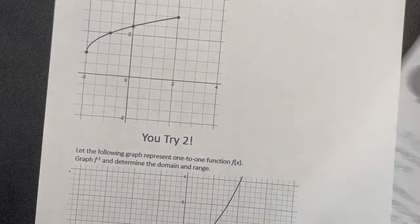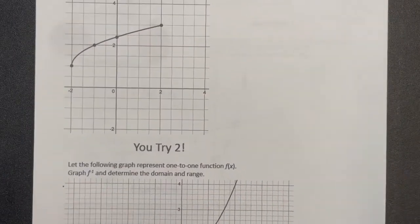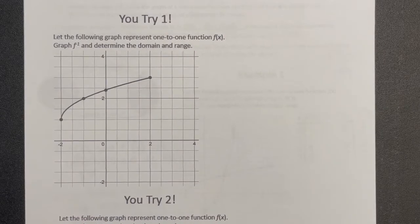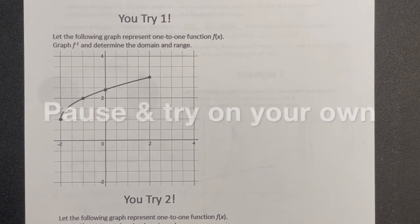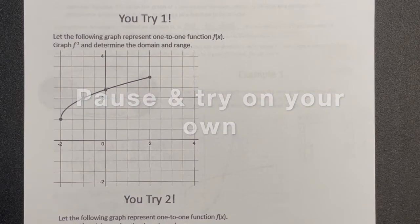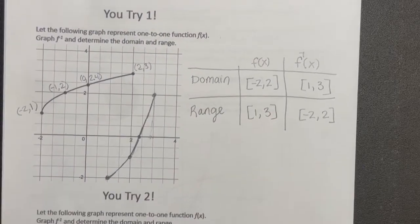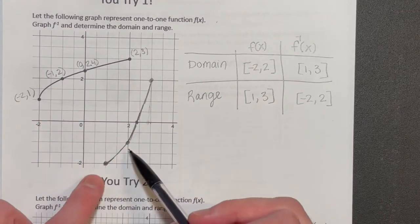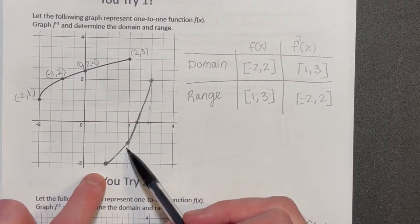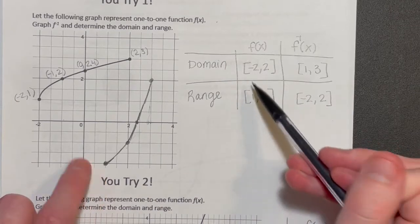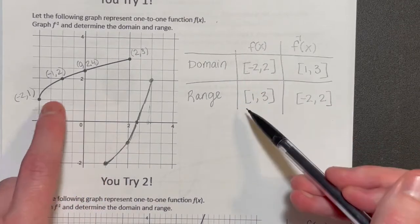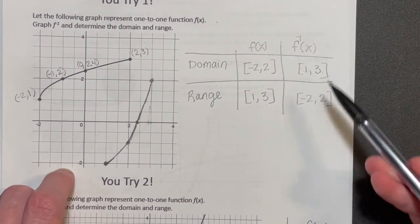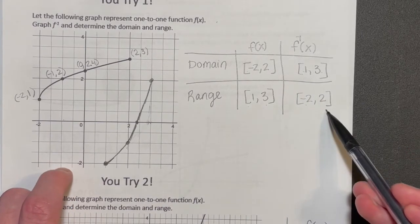Go ahead and try those last two examples on the second page, then check the video to see if you're understanding this. For the first of those examples, that reflection gives us f-inverse. The domain and range have swapped: what was negative 2 to 2 for the domain and 1 to 3 for the range has swapped to 1 to 3 for the domain of f-inverse and negative 2 to 2 for the range of f-inverse.